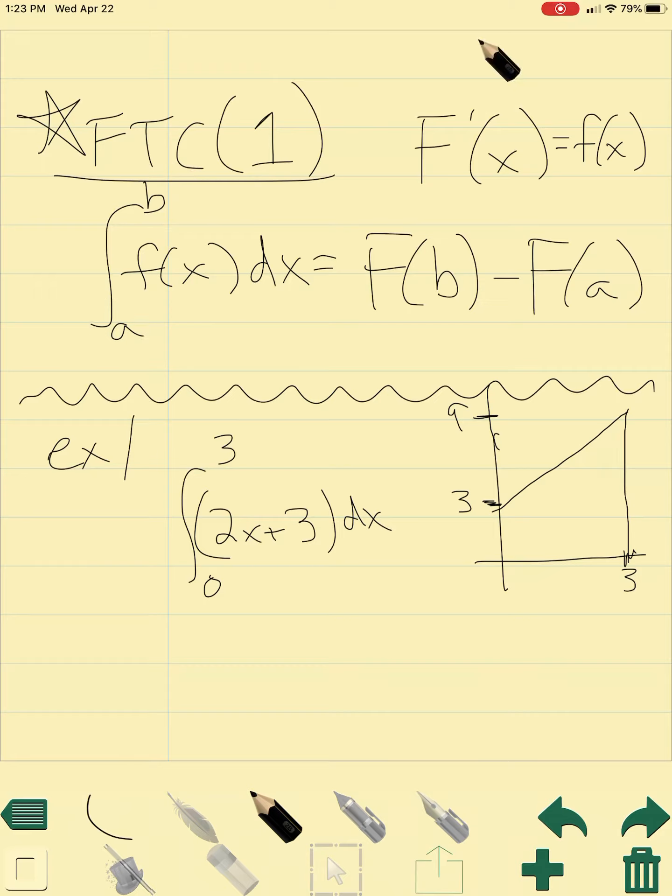So a definite integral, if we are looking at that from a to b of f of x dx, and we know that capital F of x is the antiderivative of f of x, which basically says if I take the derivative of capital F of x, it gives us lowercase f of x.